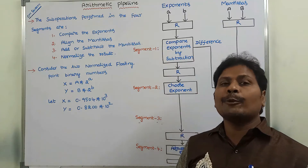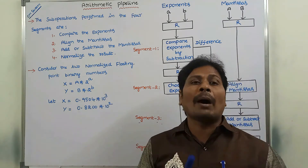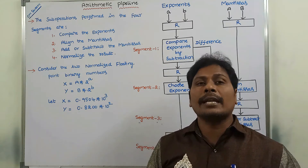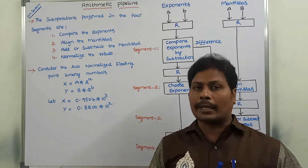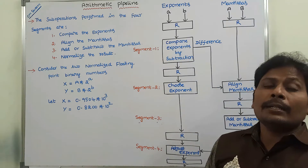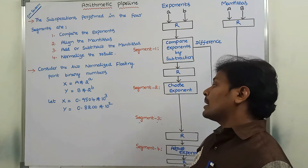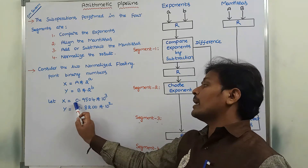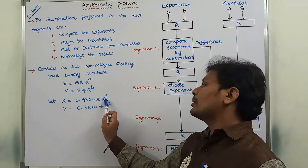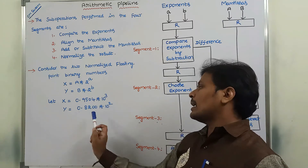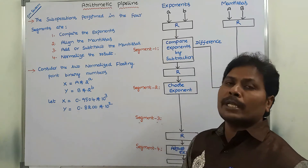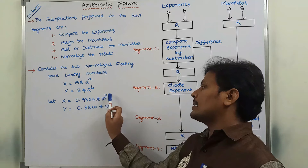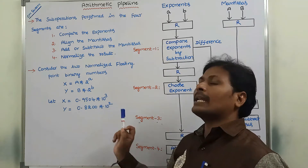We are using base value either two or ten. If the base value is two, then it can be called as a binary floating point number. If the base value is ten, it can be called as a decimal floating point number. Let us consider two normalized floating point numbers. The first number is 0.9504 × 10³ and the second number is 0.8200 × 10². These are the mantissas, these are the exponents, and this is the base value.